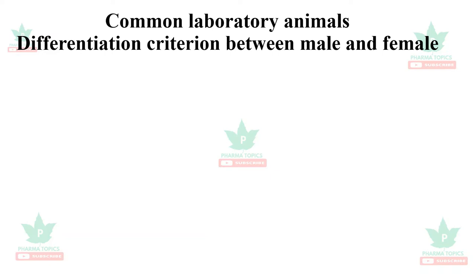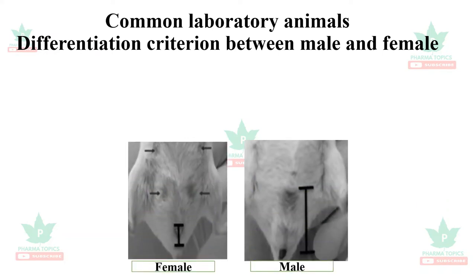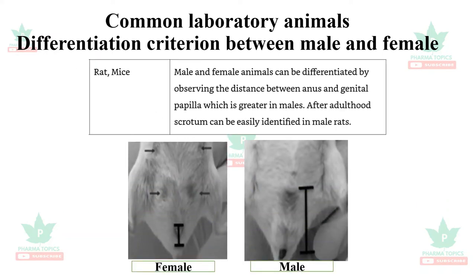In this video, first we will see the differentiation criteria between male and female in rats. In case of rats and mice, male and female animals can be differentiated by observing the distance between the anal and genital papilla, which is greater in males. You can see in this diagram the distance between the anus and the genital papilla is more in case of males. Even after adulthood, the scrotum can be easily identified in male rats.